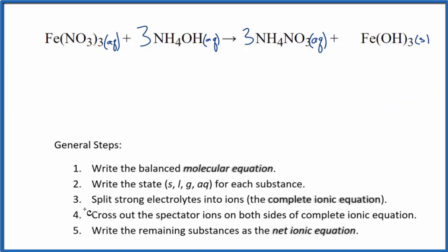Next, now that we've got the states, we can split the strong electrolytes into ions for the complete ionic equation. So iron's a transition metal. We don't know the charge for iron, but nitrate, the whole nitrate ion here is one minus. We have three of them, so the iron has to be three plus. So we have the iron 3 ion, that's Fe3+. I'll write the states later. Plus three of these nitrate ions.